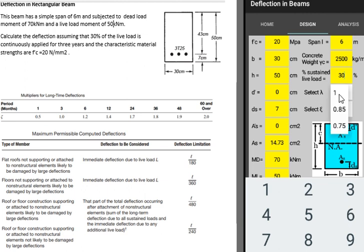Lambda - we press in this box to select Lambda. Lambda is equal to 1 for normal concrete.